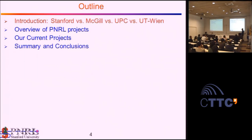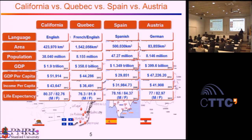First, a few words about Stanford versus a conventional European university, which is very different. Stanford is a very un-European university, and to understand why, we first have to understand how different countries are. I'm comparing several states: California versus Quebec, where I'll visit later, Spain, where we are now, and Austria, where I'm going next. Looking through the details here, it's a very interesting picture.